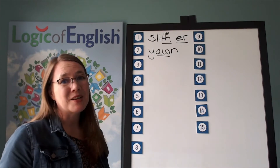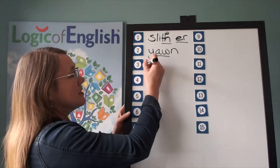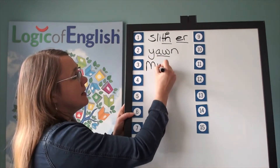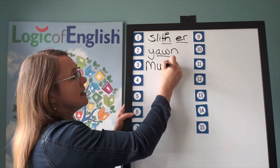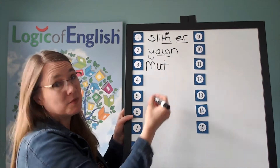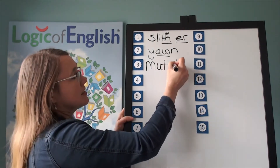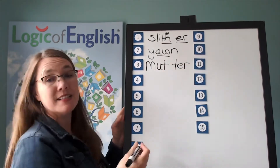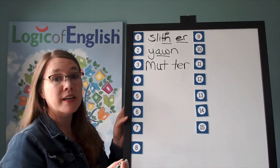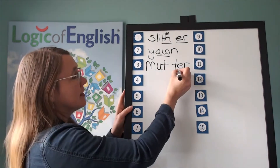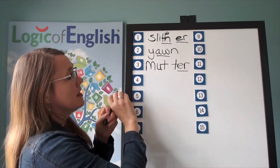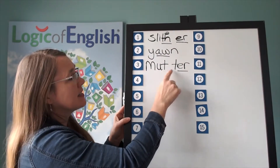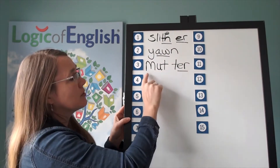Help me to write it. The first syllable is mutt: m-u-t. The second syllable is tur: t-er. And how will we mark it? We'll underline the er. Let's read it: m-u-t, t-er — mutter.